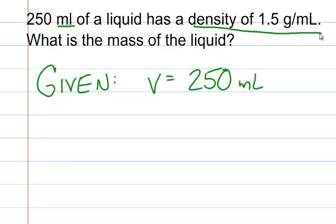We're also given a density of 1.5 grams per milliliter. We're asked to find the mass, so that gives us our unknown.